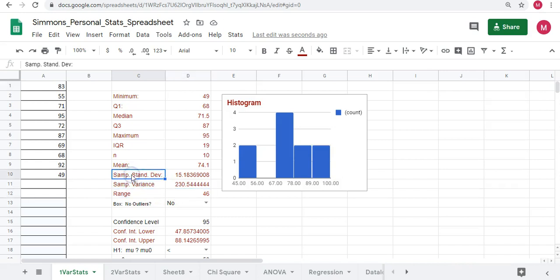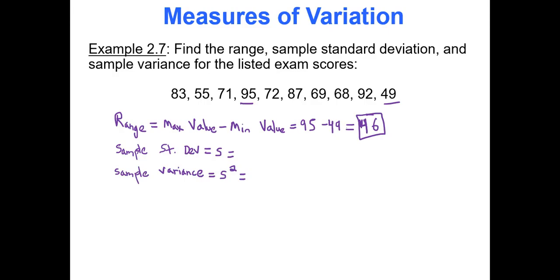So our sample standard deviation is 15.2. Please make sure as you do your homework questions that you round to the requested number of decimal places—it'll usually be one or two decimal places. Sample variance was 230.5. Those are all of your answers.